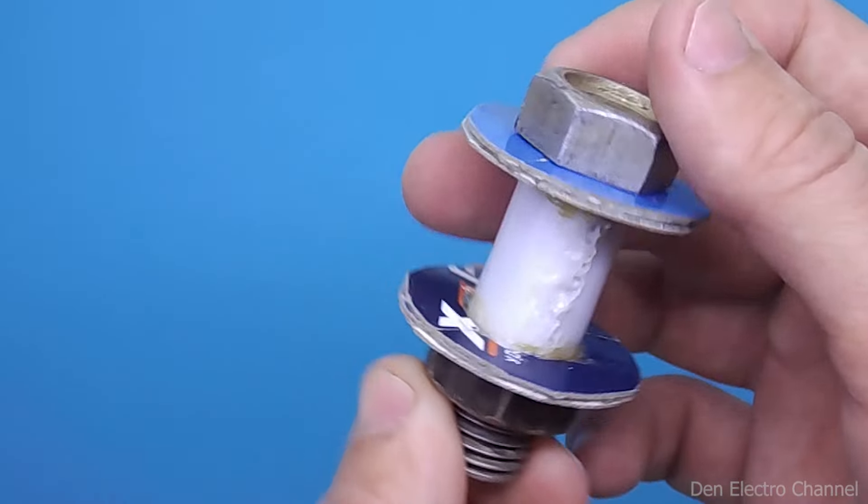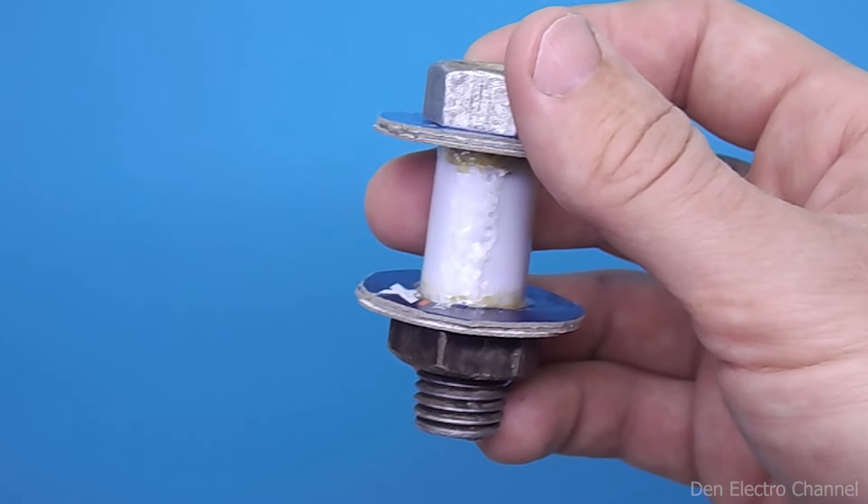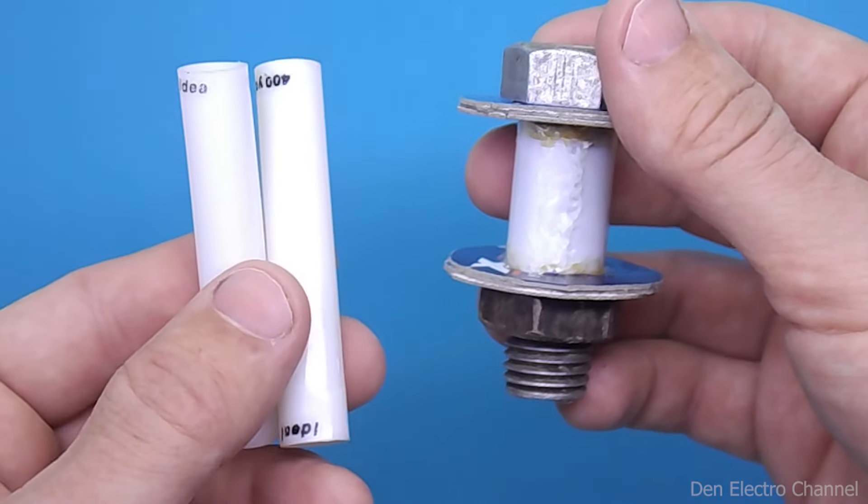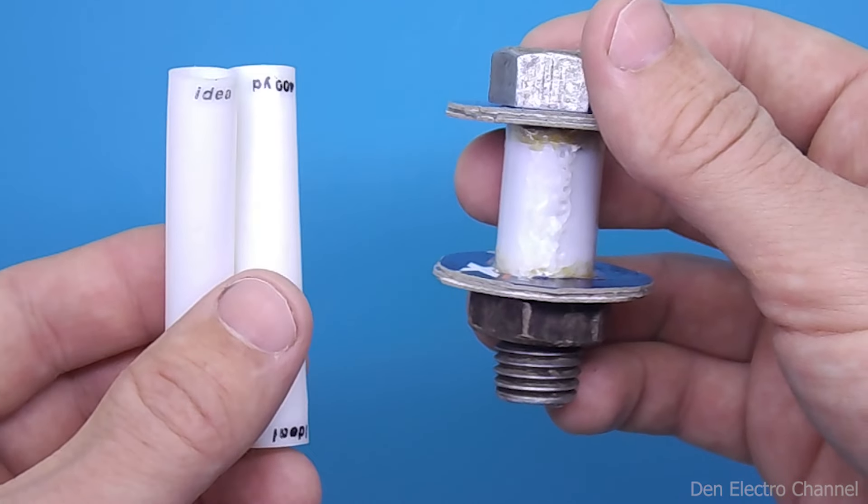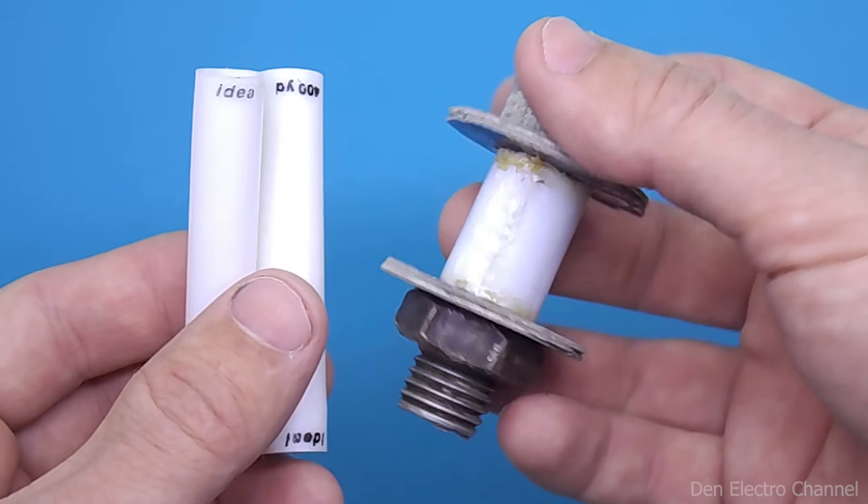The inner cylinder is glued together from two halves of thread spools. They need to be cut, then stretched a little so that they do not curl back into a tube and installed on the bolt.